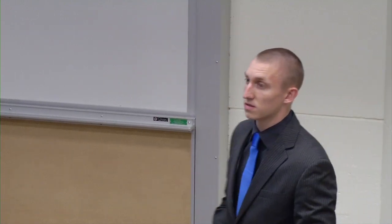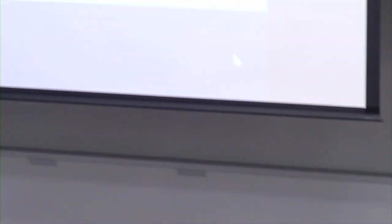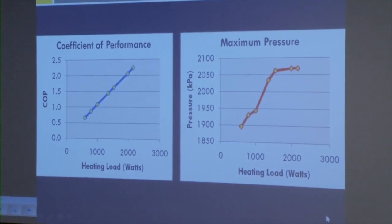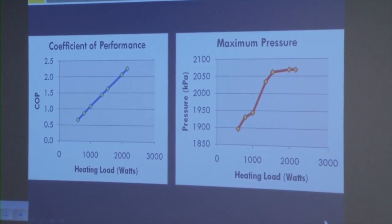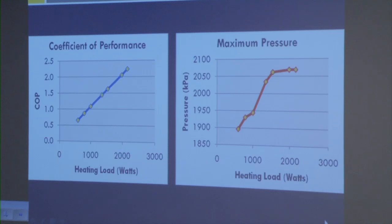On the left we have the heating load compared to COP. The heating load is directly proportional to the water flow, so as you can see the two share a linear relationship — increasing water flow increases the heating load and the COP follows suit. On the right you can see our maximum pressure, which is the pressure of the refrigerant going into the condenser. Our goal was approximately 2 megapascals or 2,000 kilopascals. We started at 15 gallons per hour and incrementally increased to about 35 gallons per hour. Once fully heated up, steady state reached about 50 kilopascals over our target of 2,000 kilopascals, confirming our system was functioning as predicted.